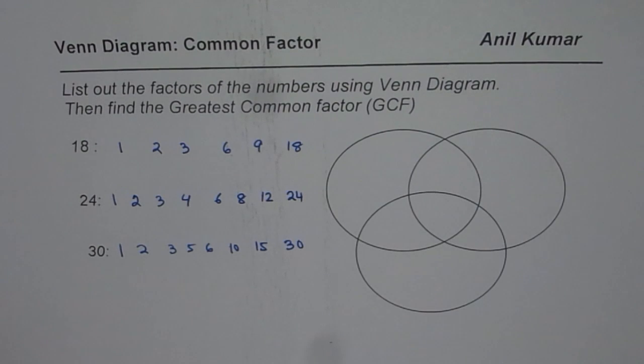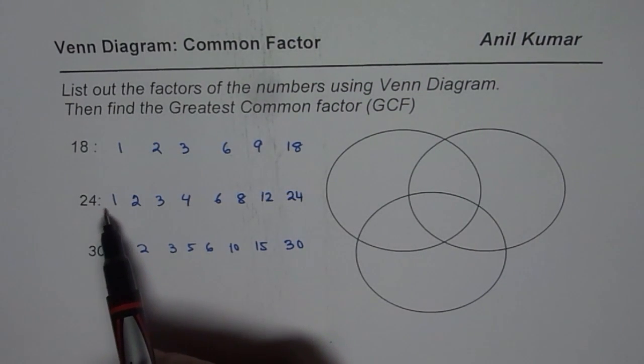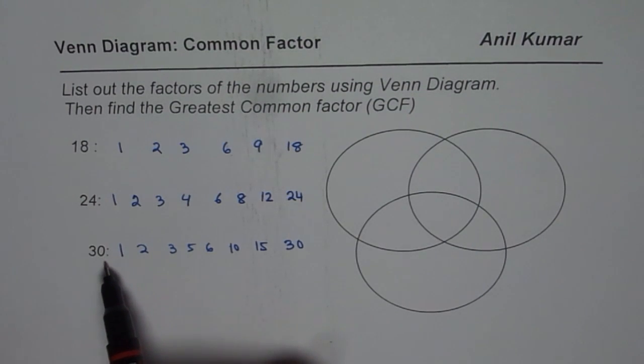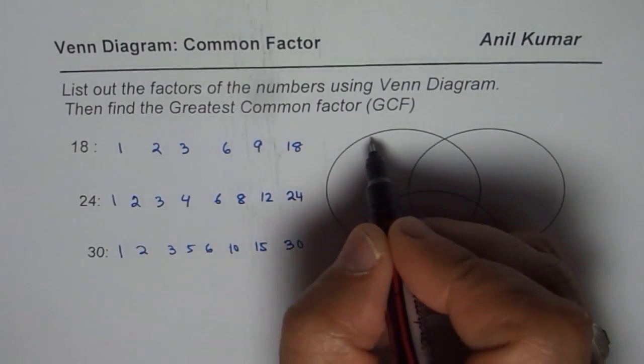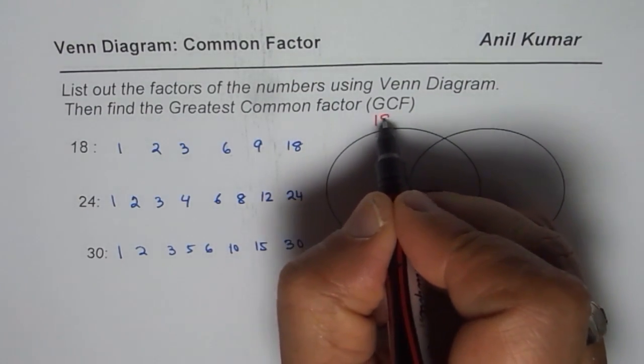Now, which are common factors? We could have common factors for 18 and 12, for 12 and 30, and common for all three. That is a complicated part. So what we will do here is, we will say this big circle on the left side is for factors of 18.